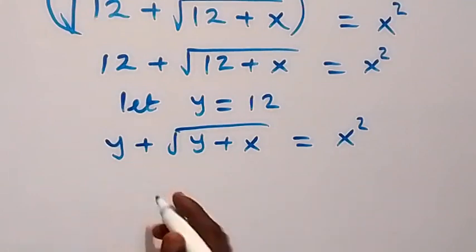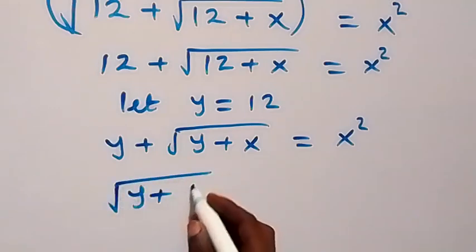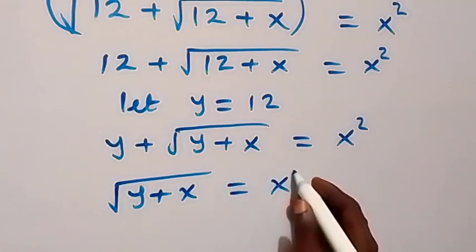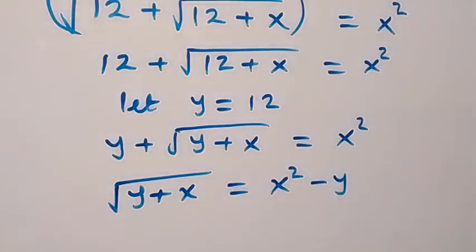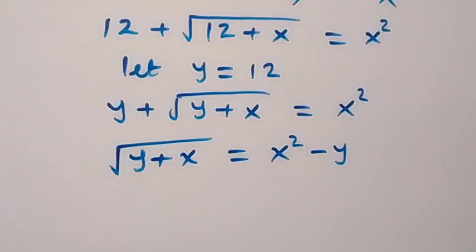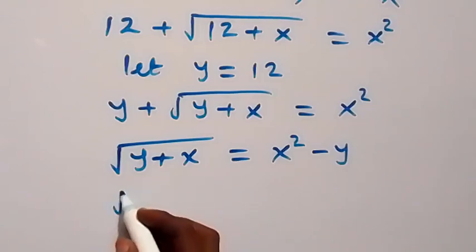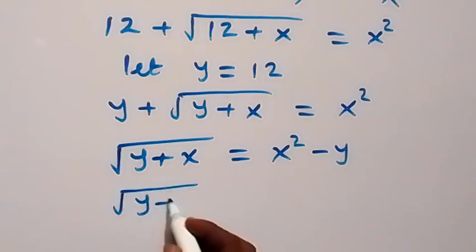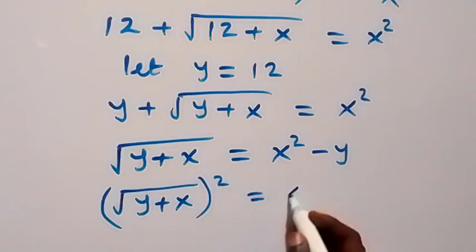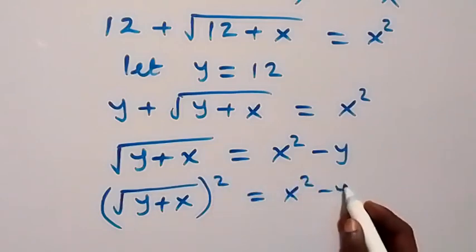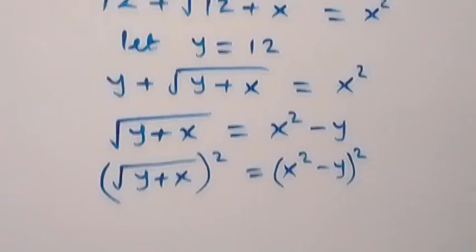From here, let's take y to this side. Then what we have left is square root of y plus x, now equals to x squared minus y. Next, to get rid of this square root, we square both sides. Then we have square root of y plus x, all squared, equals x squared minus y, all squared.